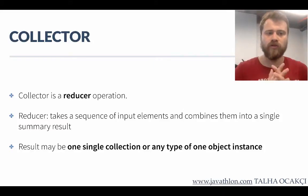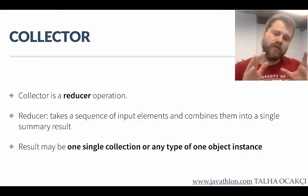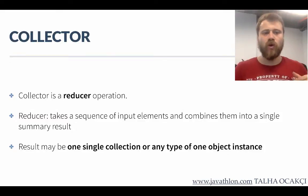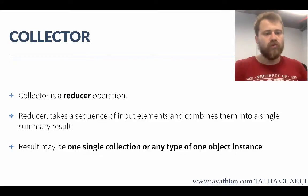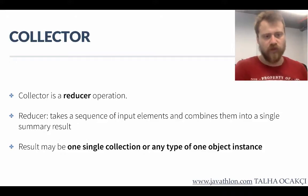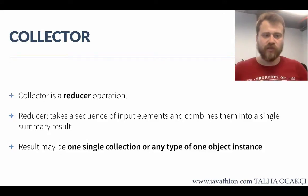Until now we talked about intermediate operations such as map, filter, sorted, distinct, etc., but as a terminal operation we only used a for-each loop to iterate over all the items and print out the values. Now we will talk about another terminal operation: a reducer operation, and especially we will talk about collectors.